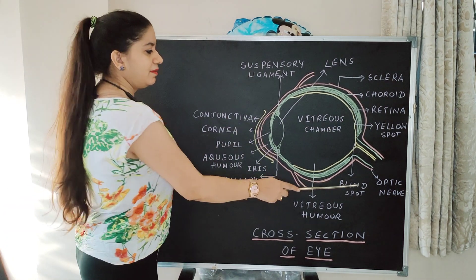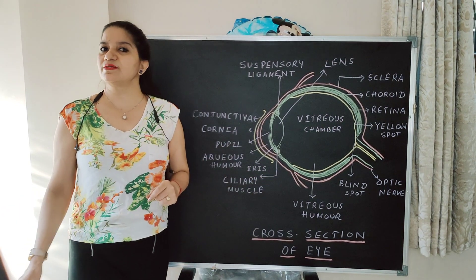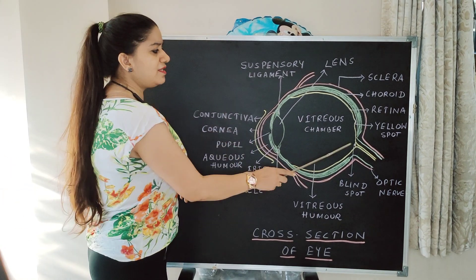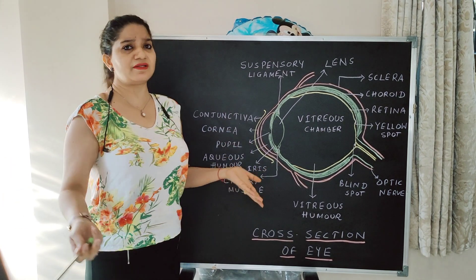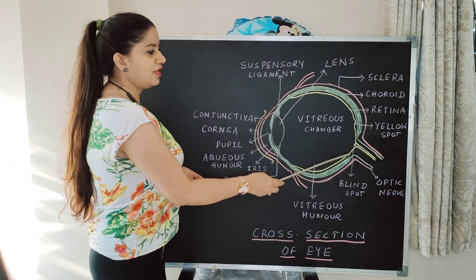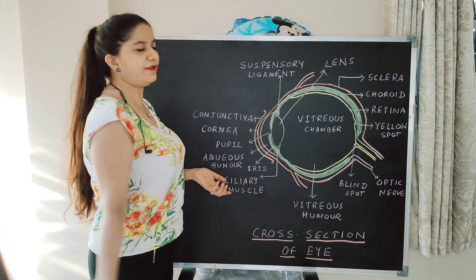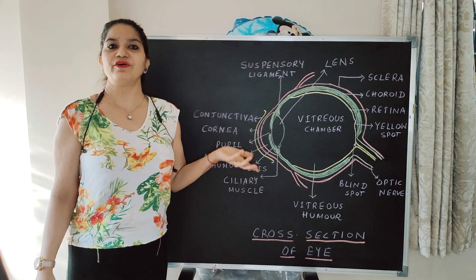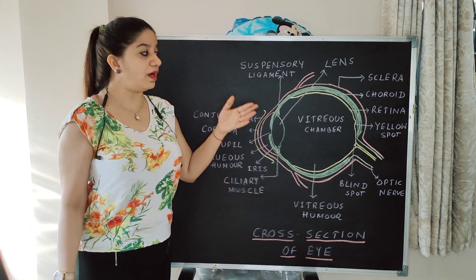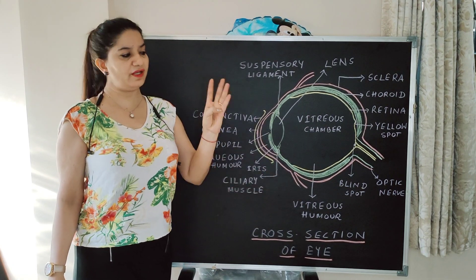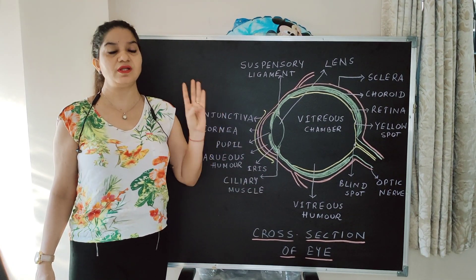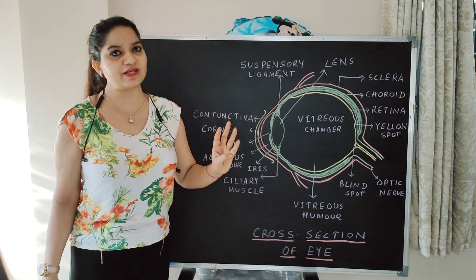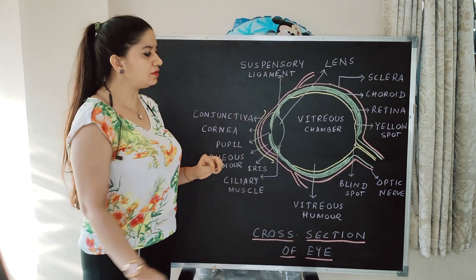The other spot is the blind spot. The blind spot is the area of no vision because the sensory cells, rods and cones, are negligible here — there are no cells. So this is the area of no vision. To summarize: area of best vision — yellow spot, macula lutea, or fovea centralis; area of no vision — blind spot.